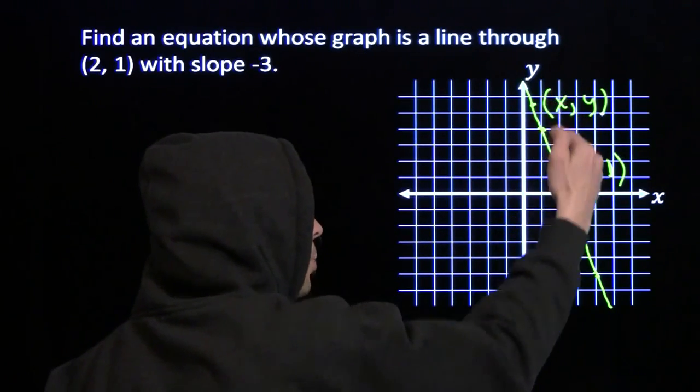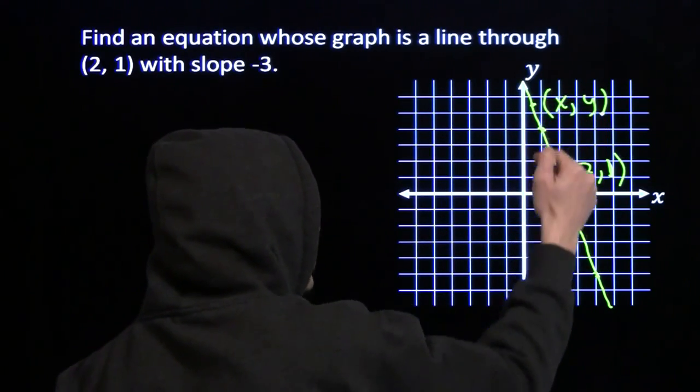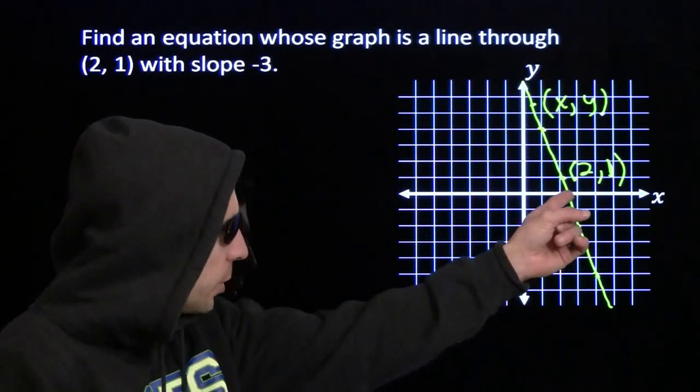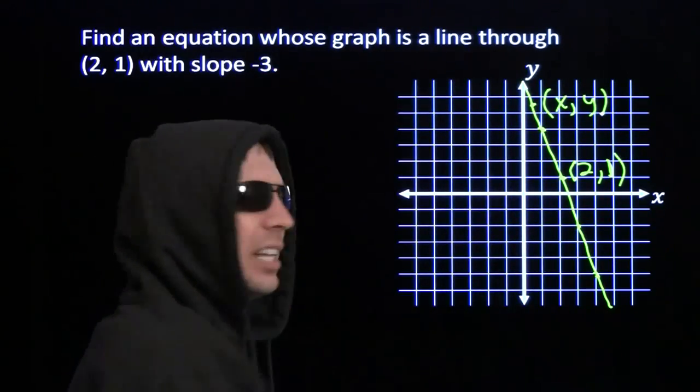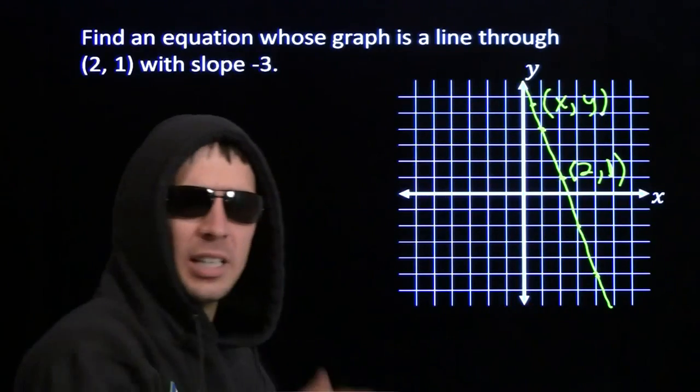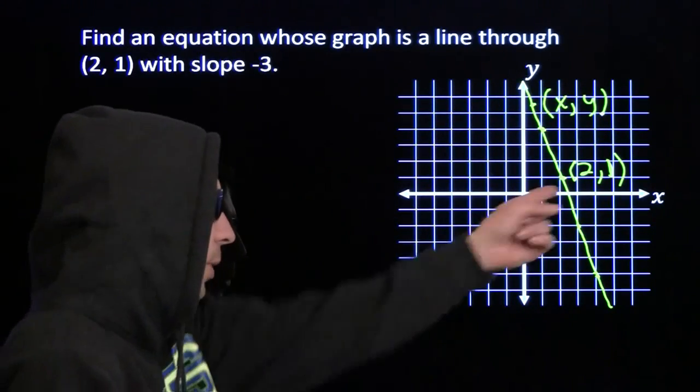What do we know about this point? Because it's on the line, we know that its slope between that point (x,y) and the point that we were given (2,1) has to be -3. That's what it means to live on this line. Any two points on this line, the slope between them has to be -3.